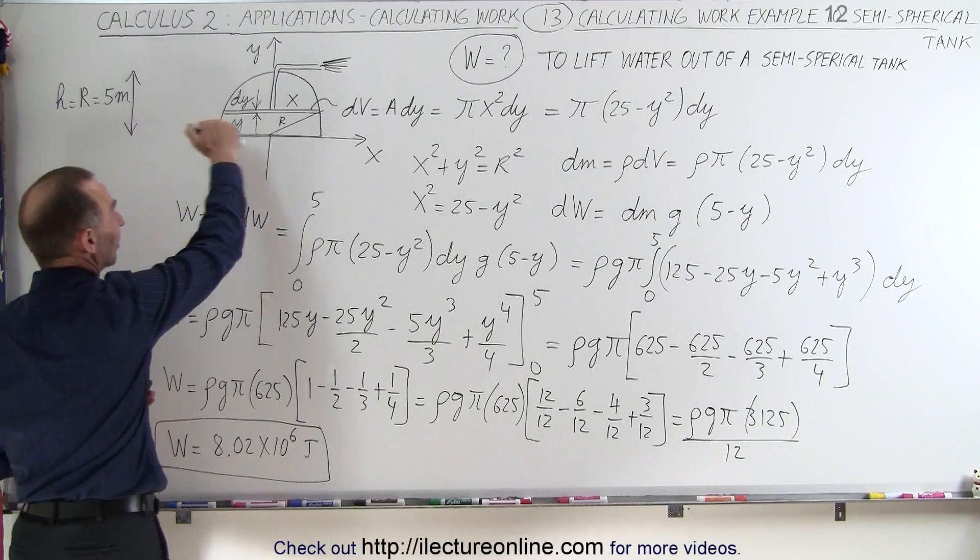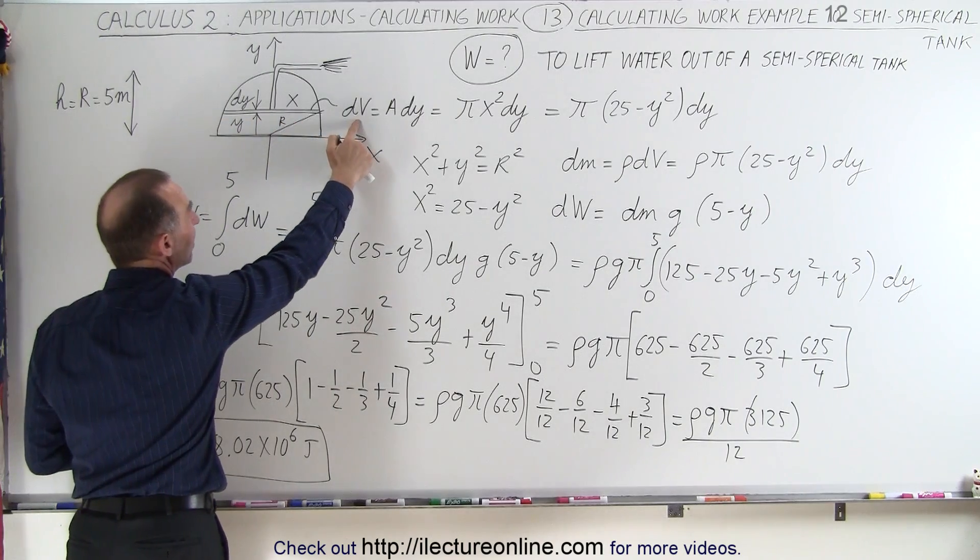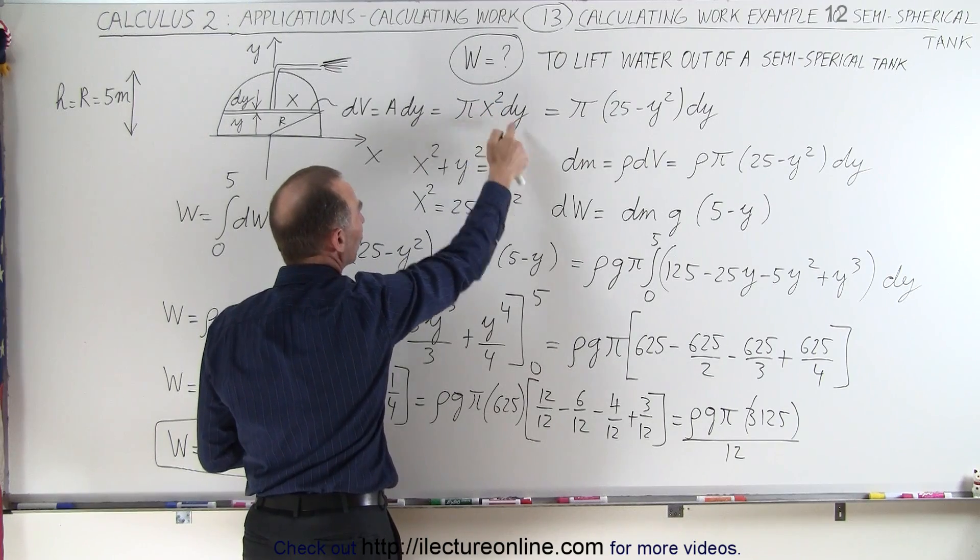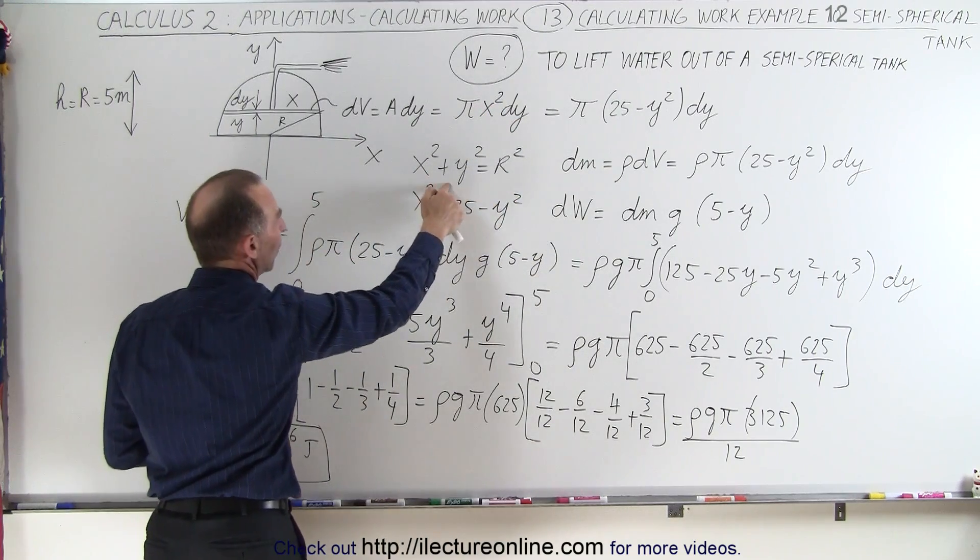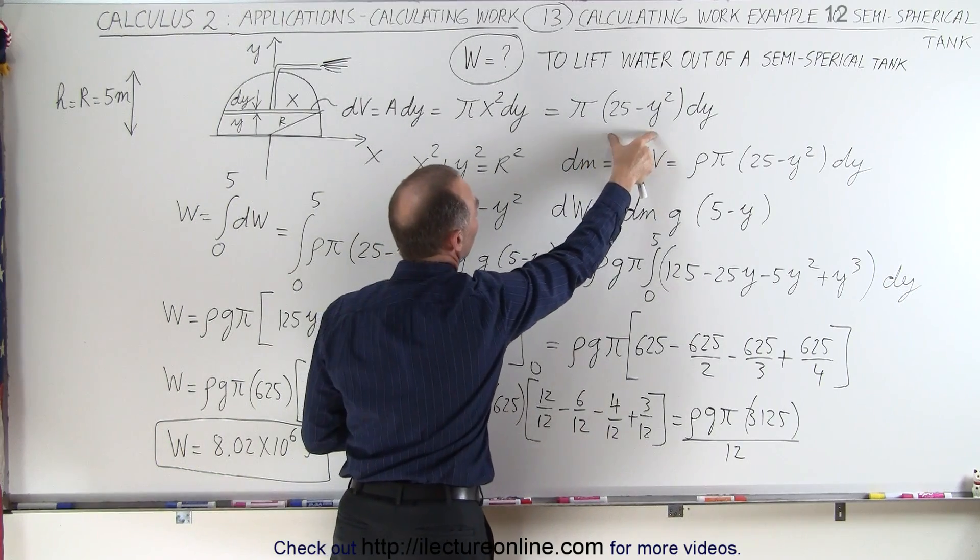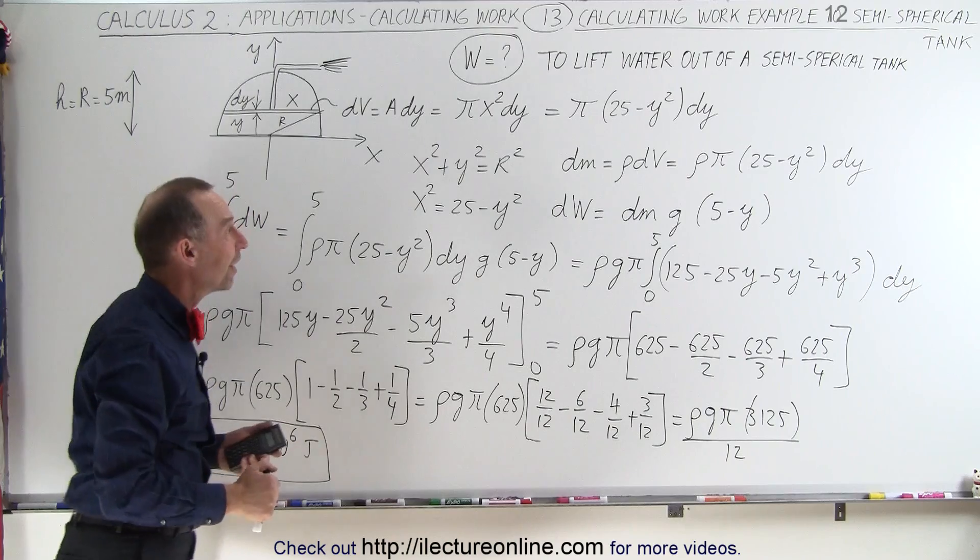Again, the method is: find the slice, define the slice as dV. When it is in terms of x² dy, we have to then relate x to y. We do that using x² + y² = r², then replace x² by 25 - y², since r² is 25.